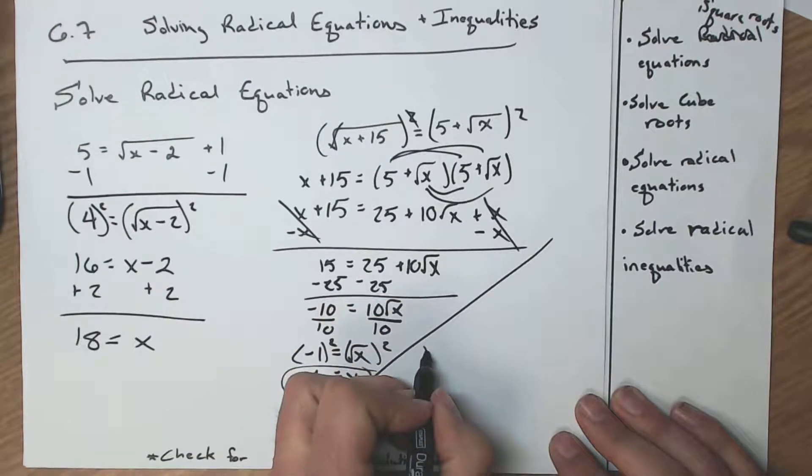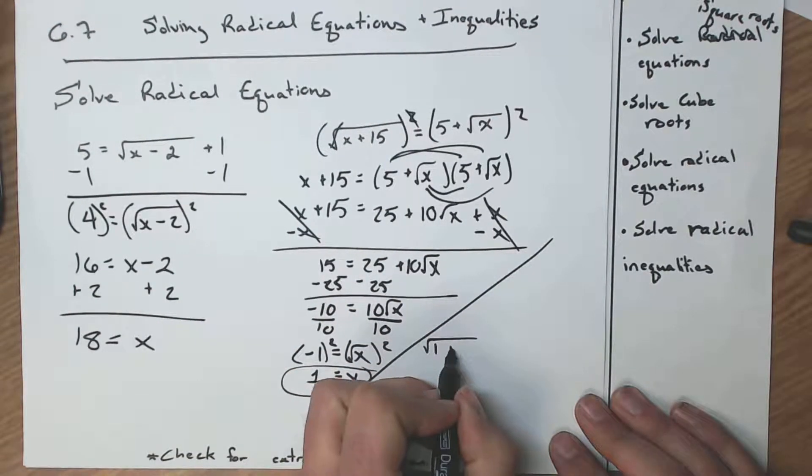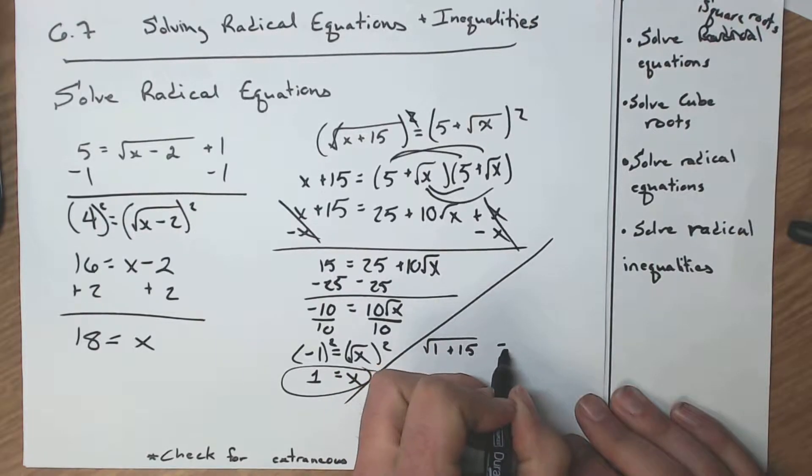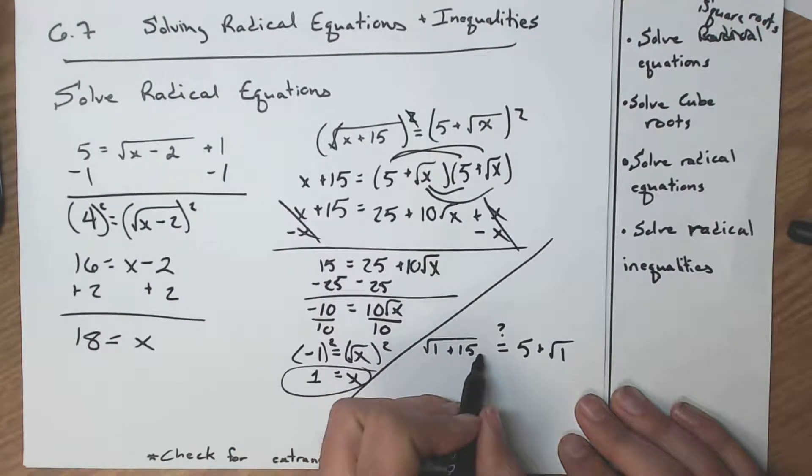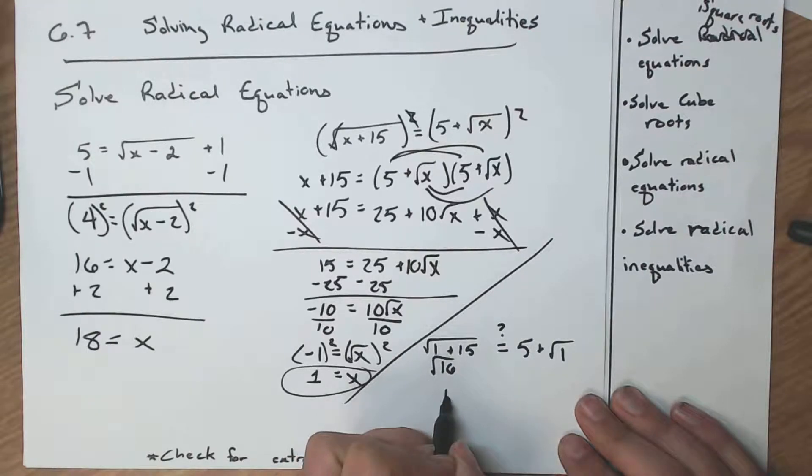Let's do that just over here. So we have a square root of 1 plus 15. Does that equal, so I'm going to put a little question mark above it, 5 plus the square root of 1? Well, 1 plus 15 is 16. Square root of 16 is a 4.